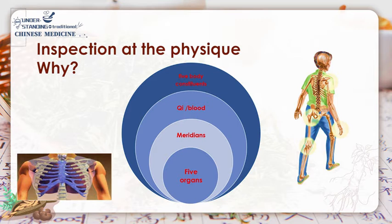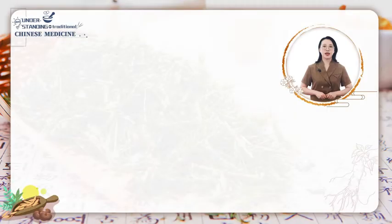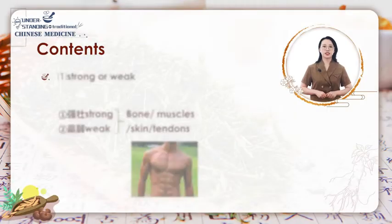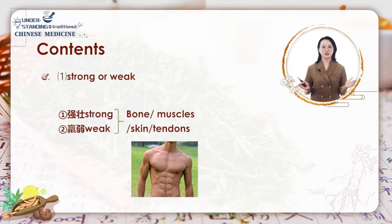The lung is connected with the skin and body hair, the spleen with the muscles, the heart with blood vessels, the liver with tendons, and the kidney with bones. These five structures are called the five basic body constituents, which serve as external reflections of the condition of the zhangfu organs. The inspection of the physical includes those aspects.